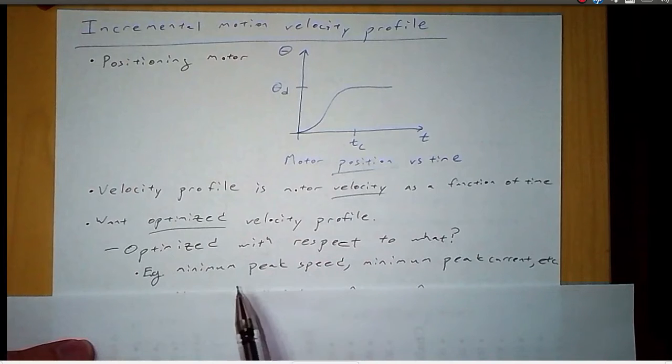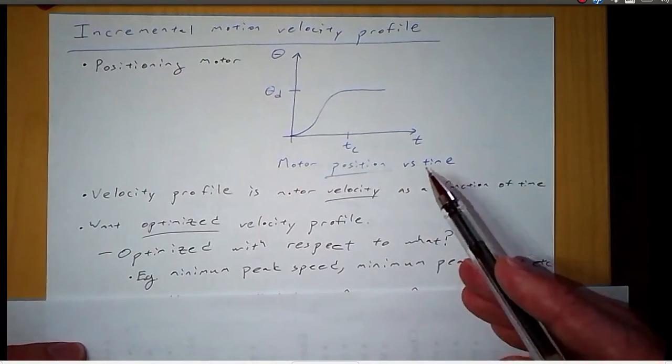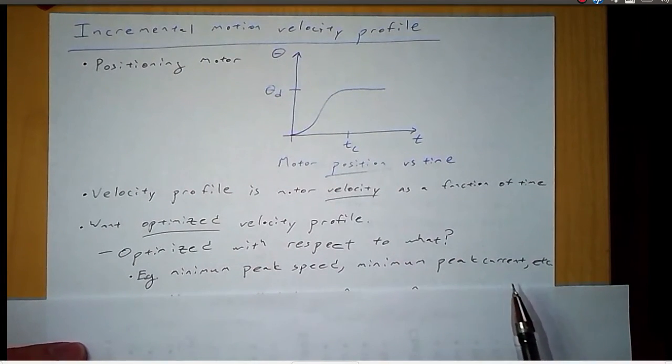So here are some examples of what we could optimize our velocity profile with respect to. We could come up with a velocity profile that's going to have a minimum peak speed. So that means that the highest speed the motor gets is going to be minimized with this velocity profile. Or we could have one that has a minimum peak current, or et cetera. So there are different ways we could optimize our velocity profile.